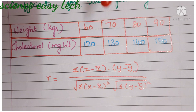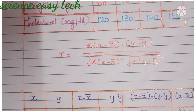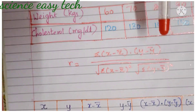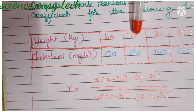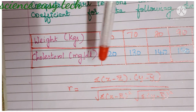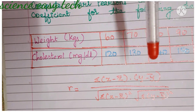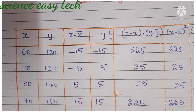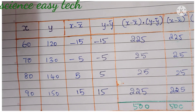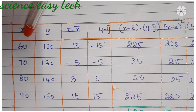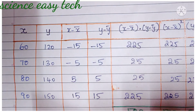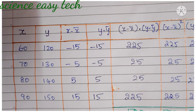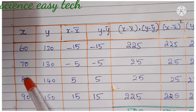Let us see how we can compute this. First, take the given values: weight in kg goes into the x column — values 60, 70, 80, 90. The cholesterol values go into the y column — 120, 130, 140, and 150. We have been given the x values and y values, so now we proceed with the calculation.